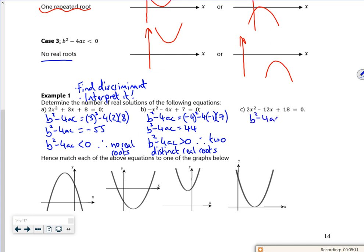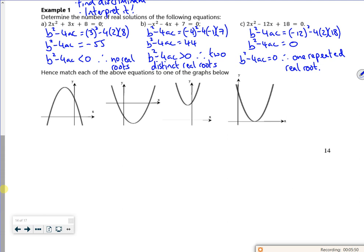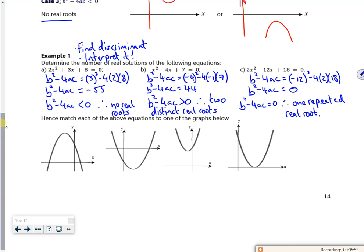So b squared minus 12 squared minus 4, lots of 2 times 18. I'm guessing that this is equal to 0, because it's the only one we've not had. The complete impact says yes. So b squared minus 4ac equals 0. I'm going to write it down. There you go. That's all right, isn't it? It's nice and easy. So then what does it say?